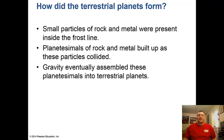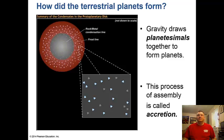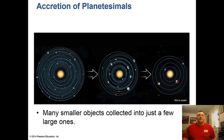The terrestrial planets formed from small particles of rock and metal that were present inside the frost line, the place where ice freezes in the solar system. These tiny planetesimals of rock and metal built up as particles collided and accreted. Gravity eventually assembled these planetesimals into terrestrial planets. The process of assembly is called accretion - many small objects collected into just a few large ones.